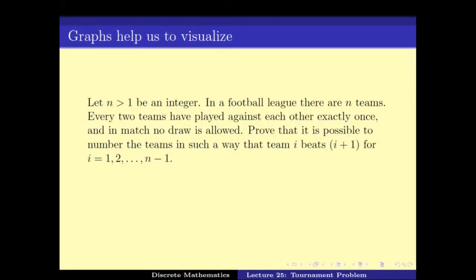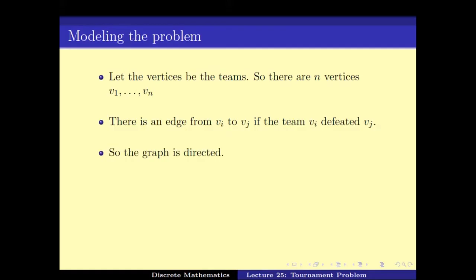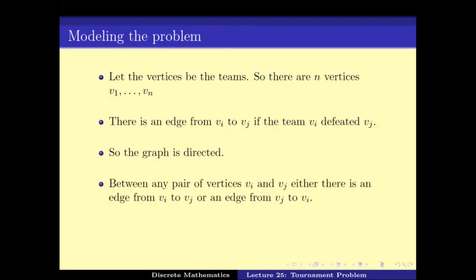Coming back to our problem, we converted it into a graph problem. We consider the n vertices v1 to vn as the teams, and draw a directed edge from vi to vj if team vi defeated team vj. Since vi defeating vj means vj does not defeat vi (they play only one game), the graph is directed. And since any two teams played exactly once with no draw, between any two vertices there must be an edge in one of the two directions.